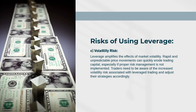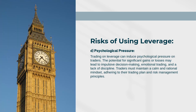C. Volatility risk: Leverage amplifies the effects of market volatility. Rapid and unpredictable price movements can quickly erode trading capital, especially if proper risk management is not implemented. Traders need to be aware of the increased volatility risk associated with leverage trading and adjust their strategies accordingly. D. Psychological pressure: Trading on leverage can induce psychological pressure on traders. The potential for significant gains or losses may lead to impulsive decision-making, emotional trading, and a lack of discipline. Traders must maintain a calm and rational mindset, adhering to their trading plan and risk management principles.